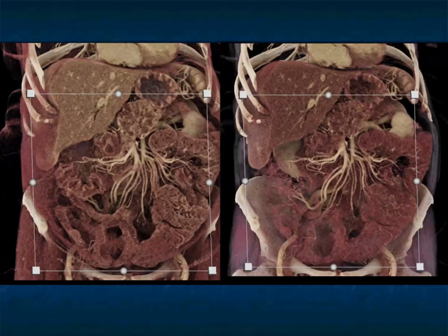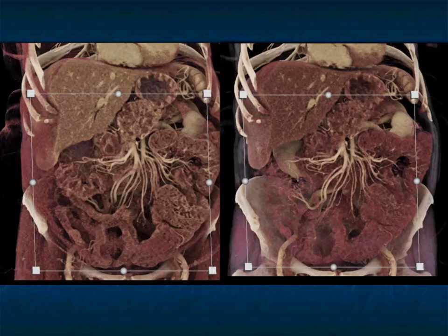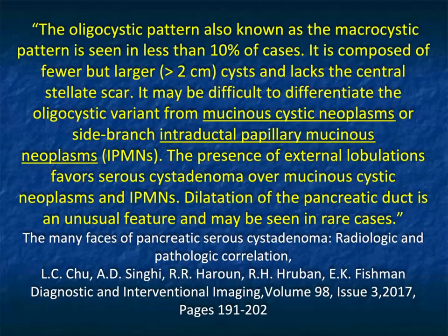In terms of vessels, we can see mass effect on vessels. I showed you an example and commented about scalloping on the portal vein and SMV. If things are large enough, they can displace the SMA or even the celiac. We talk about draping, but we don't talk about vascular invasion — there is no vascular invasion present.